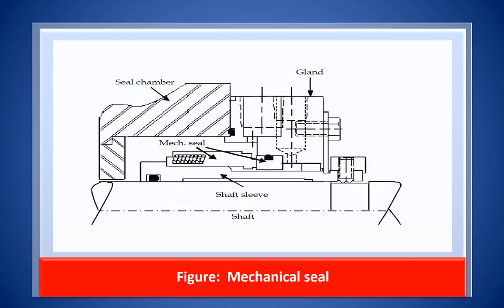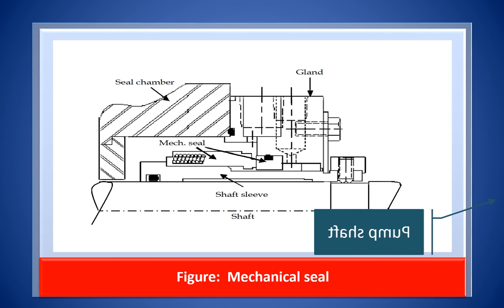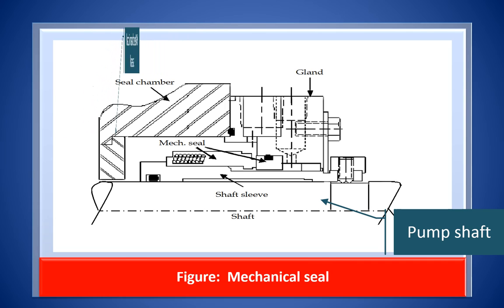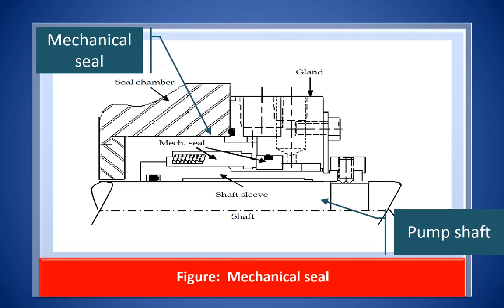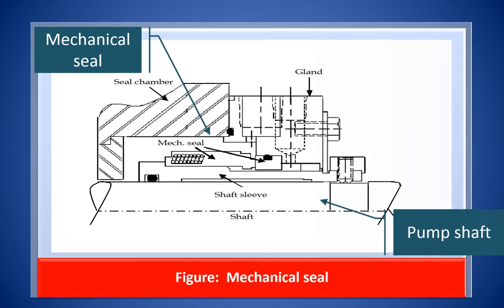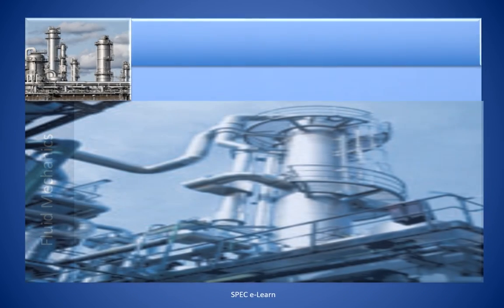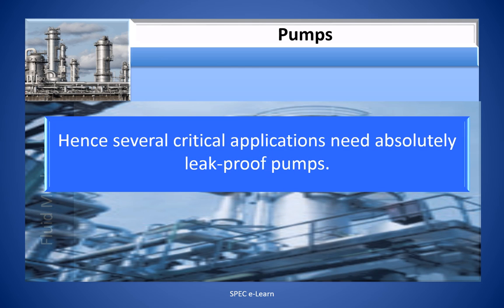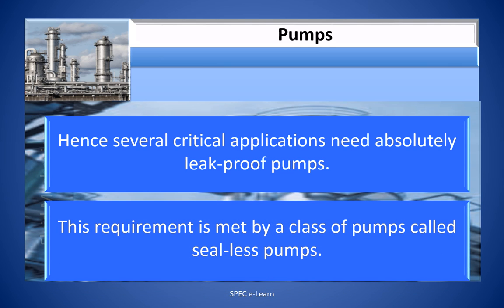Illustrated here is the mechanical seal fitted on the shaft of a pump. Observe the internal parts that work together to keep the pumped liquid contained within the pump. If any of the critical parts fails, the liquid will start leaking to atmosphere causing hazard. Hence, several critical applications need absolutely leak-proof pumps. This requirement is met by a class of pumps called seal-less pumps.